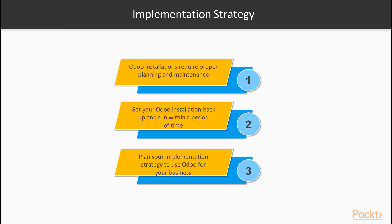Successful Odoo installations require proper planning and maintenance. Care must be taken in documenting important configuration details, and you must always have a business continuity plan in place that focuses on getting your Odoo installation back up and running within an acceptable period of time. While you are learning and prototyping, you may not care much about a clear implementation strategy. However, once you have made the decision to use Odoo for your business, it is important to plan your implementation strategy.